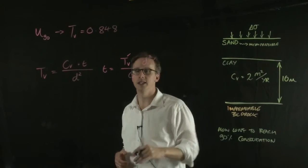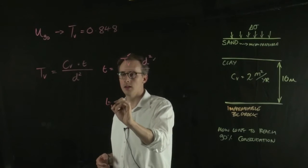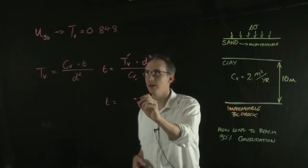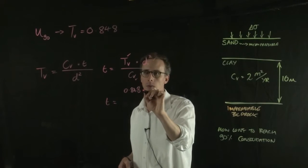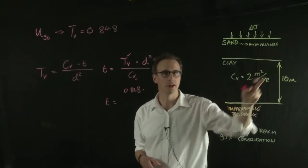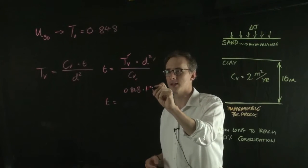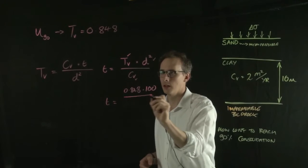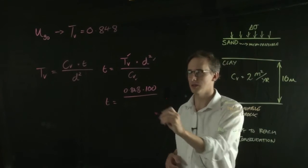So we also know D now. So we can work out the time, and that's equal to the TV value, which is 0.848, multiplied by the drainage pathway, which is squared, which is the thickness of the layer squared, in this case 100, divided by the CV value, which is 2.